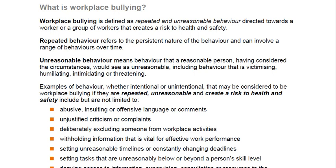Examples of behavior — whether intentional or unintentional — that may be considered workplace bullying if repeated, unreasonable, and creating a risk to health and safety include: abusive, insulting or offensive language or comments; unjustified criticism or complaints; deliberately excluding someone from workplace activities; withholding information vital for effective work performance; and setting unreasonable timelines or constantly changing deadlines. These things cause stress — you can never be at peace or enjoy being at work where this kind of behavior takes place.